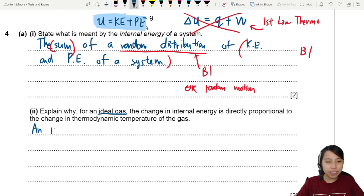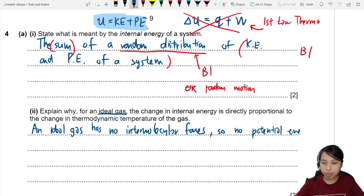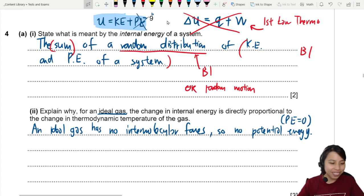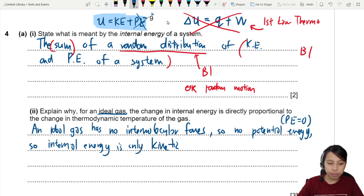So an ideal gas has no intermolecular forces. What does that mean? No force, no potential energy. So no potential energy, in other words, potential energy is zero. You can also mention that. Okay, great. What does that mean? So now we only have U equals to KE, because if there's no PE already, zero, it's just U equals KE. So we say, so internal energy is only the kinetic energy of the particles. In other words, what you have left is just U equals to KE.